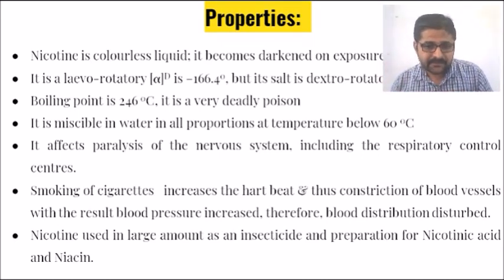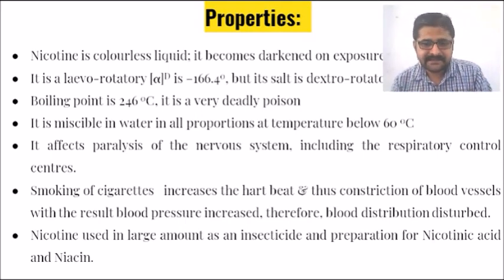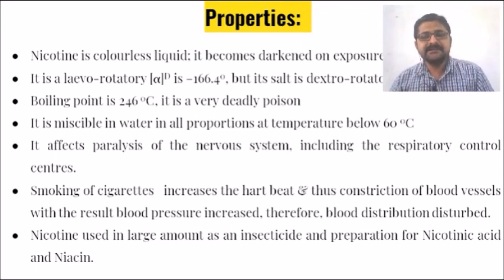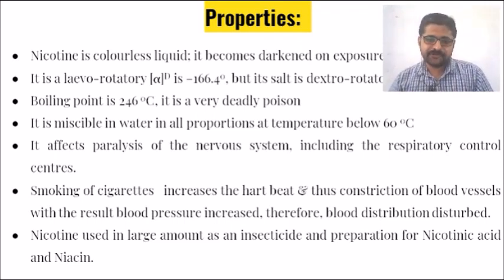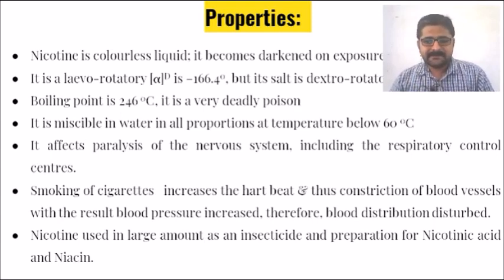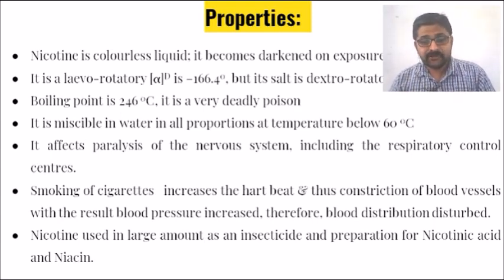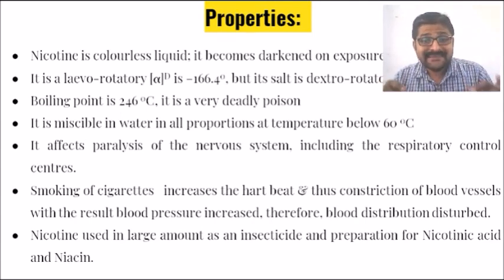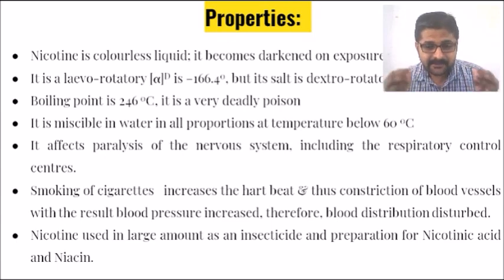Smoking a cigarette increases heartbeat and causes constriction of blood vessels, resulting in increased blood pressure. Therefore, blood distribution is disturbed. Nicotine is used in large amounts as an insecticide and in the preparation of nicotinic acid and niacin. So the actual use of nicotine is as an insecticide.